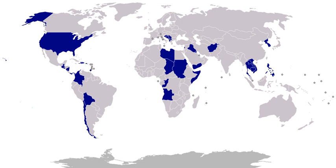1815, Tripoli: after securing an agreement from Algiers, Captain Decatur demonstrated with his squadron at Tunis and Tripoli, where he secured indemnities for offenses during the War of 1812. 1816, Spanish Florida: United States forces destroyed Negro Fort, which harbored fugitive slaves making raids into United States territory. 1816–1818, Spanish Florida, First Seminole War: the Seminole Indians, whose area was a haven for escaped slaves and border ruffians, were attacked by troops under General Jackson and General Edmund P. Gaines and pursued into northern Florida. Spanish posts were attacked and occupied, British citizens executed.